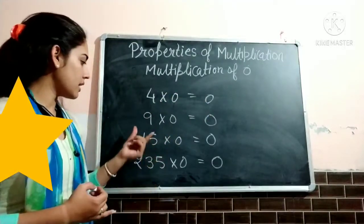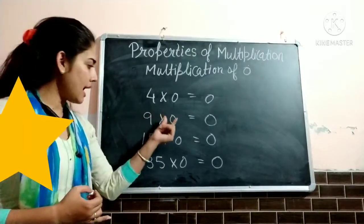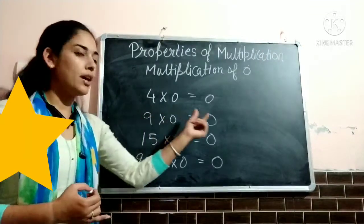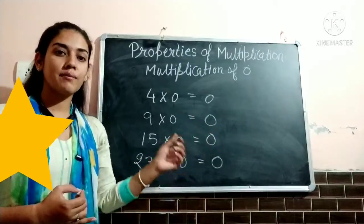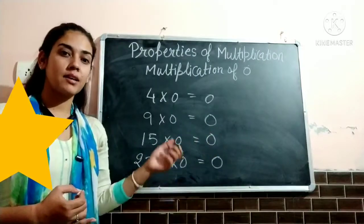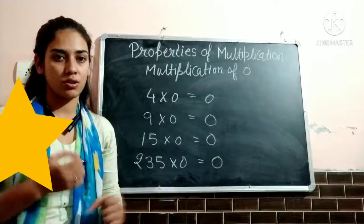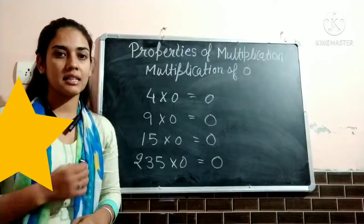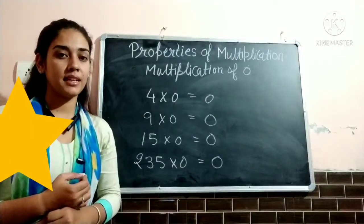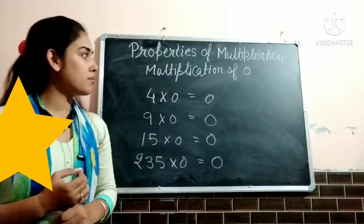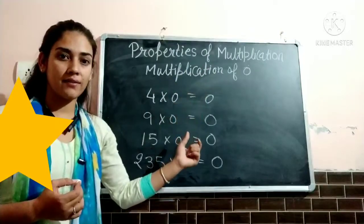The number here is 9 — the product of any number and 0 is 0. So if you want to multiply a bigger number by 0, then the answer is 0. In that case the answer will always be 0. So property of multiplication of 0 we have discussed.